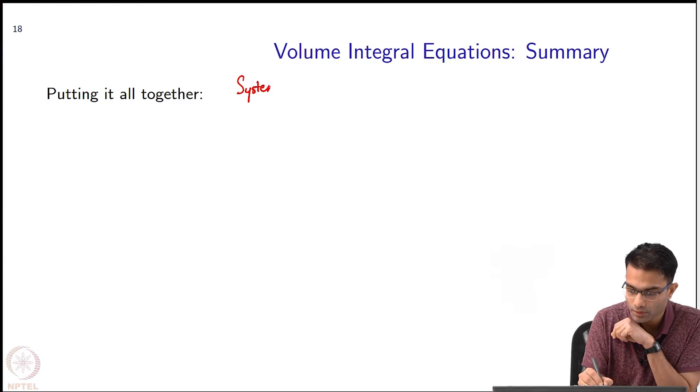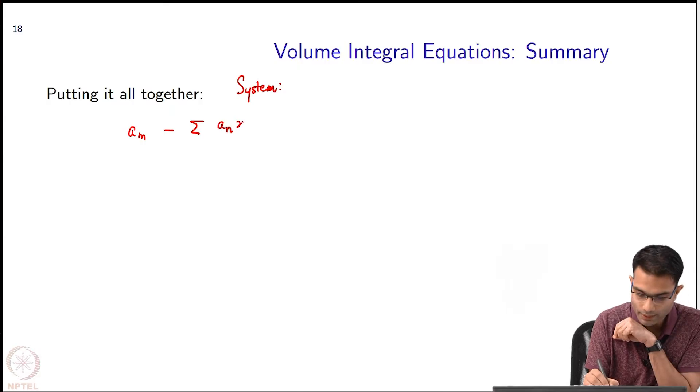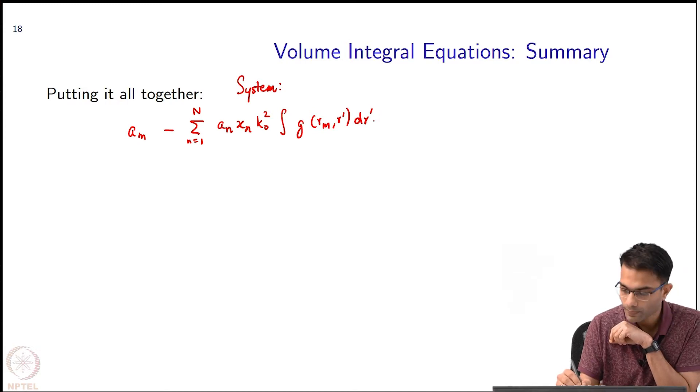So, the system of equations comes from—I'm just rewriting what we already know. A_n times n times k_naught squared, where n is equal to 1 to N, the integration is over G(r,r') times r' dr' P_n(r') dr' is equal to...